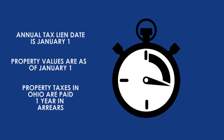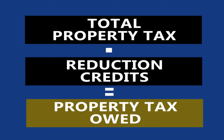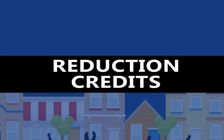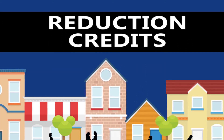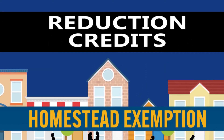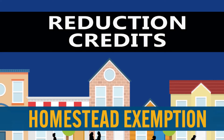Now there's another step: total property tax less reduction credits equals the property tax owed. The total property tax amount can be reduced by reduction credits, such as those for the homestead exemption program that is administered by the county auditor's office.